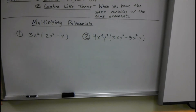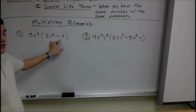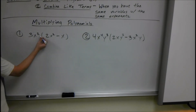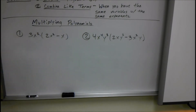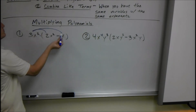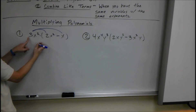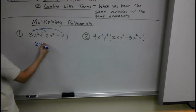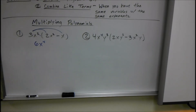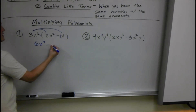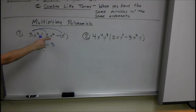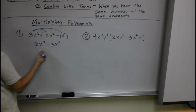Next I'm going to talk about multiplying polynomials. When we have a single term polynomial times a binomial or even a trinomial, we're just distributing. So for our first example, we have 3x squared times 2x squared minus x. This 3x squared is going to go to both of these terms. 3x squared times 2x squared — think of the numbers and letters separately: 3 times 2 is 6, and x squared times x squared is x to the fourth, because we add exponents when multiplying. And 3x squared times negative x: 3 times negative 1 is negative 3, and x squared times x to the first is x cubed. So that gives us 6x to the fourth minus 3x cubed.